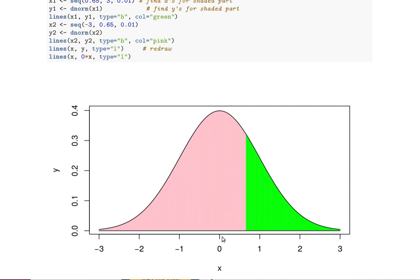We want to find this green area. The problem is that R can find the pink area by just using the pnorm of 0.65.